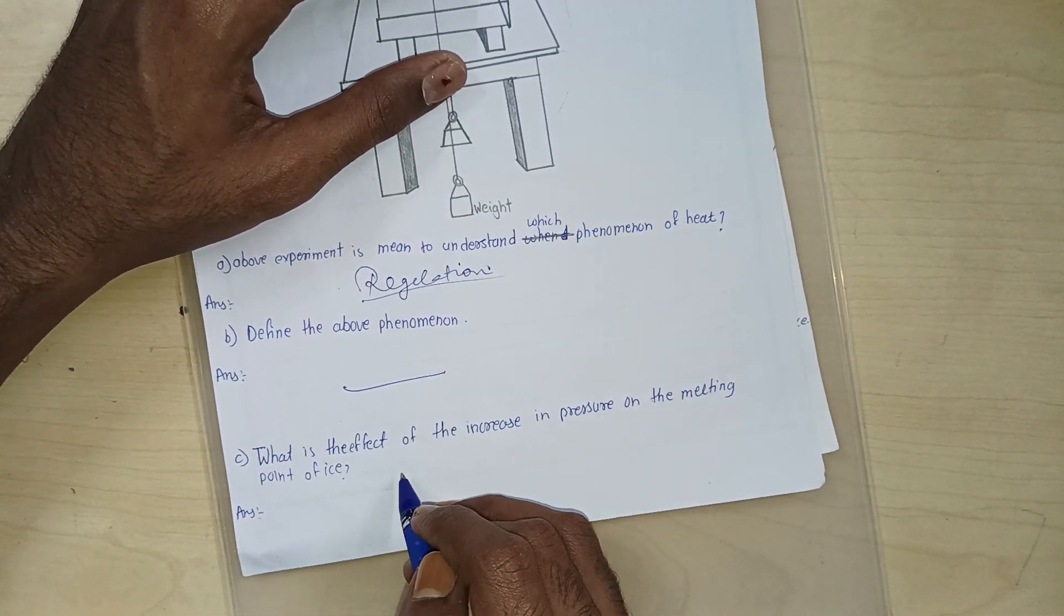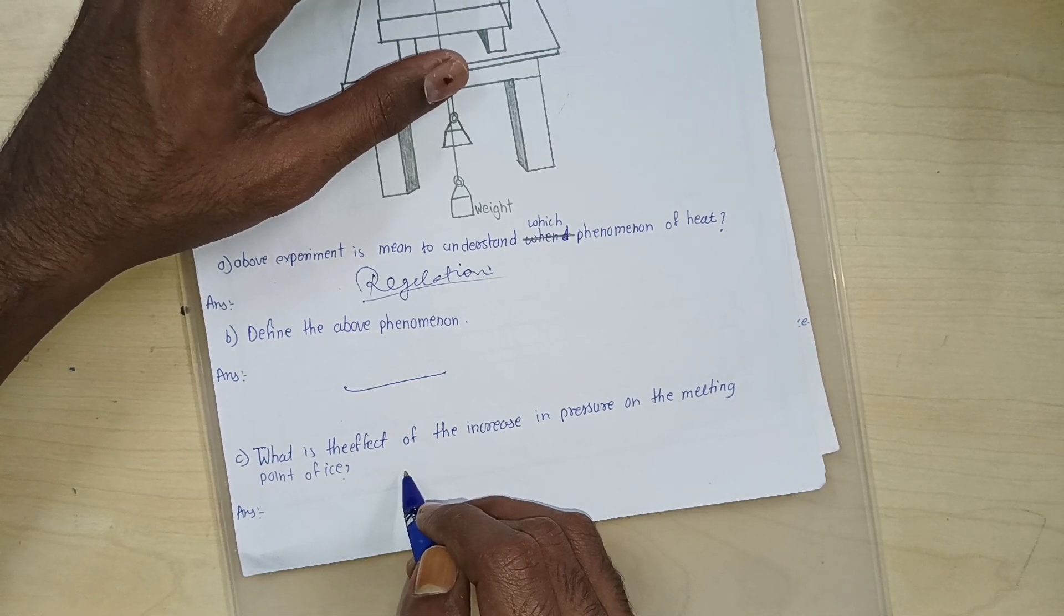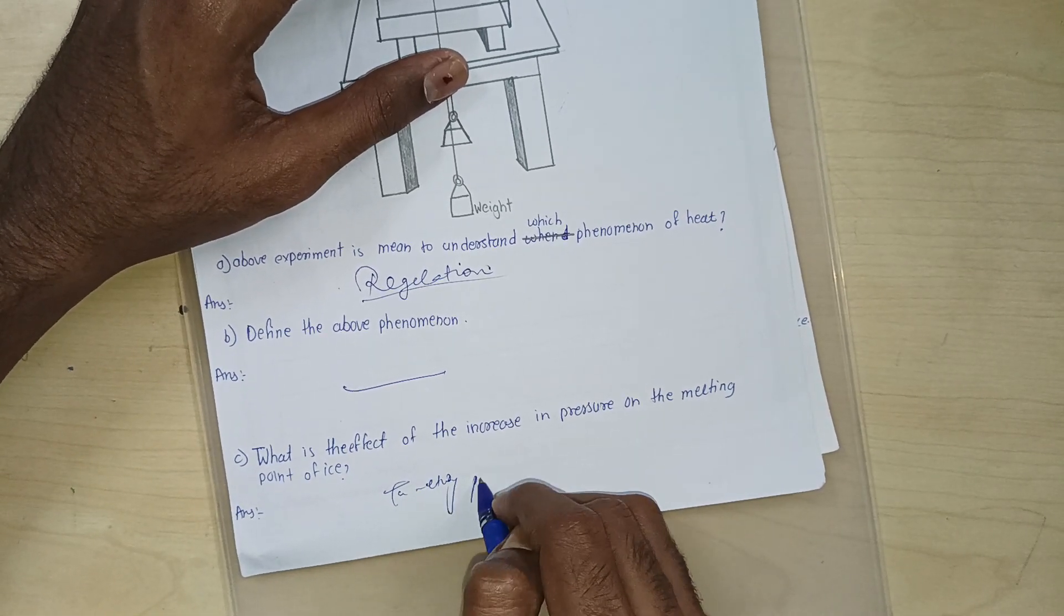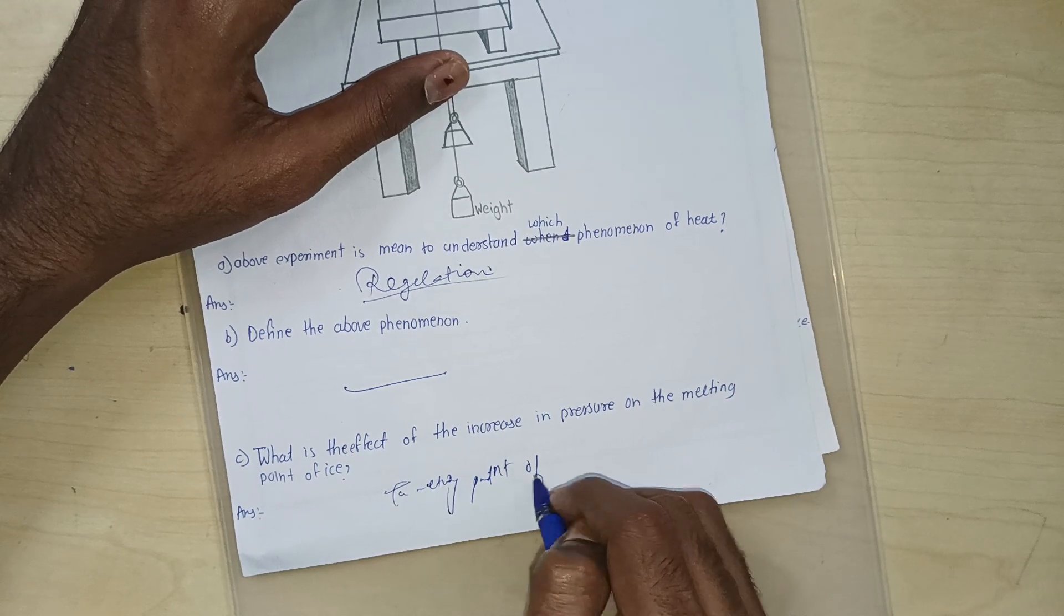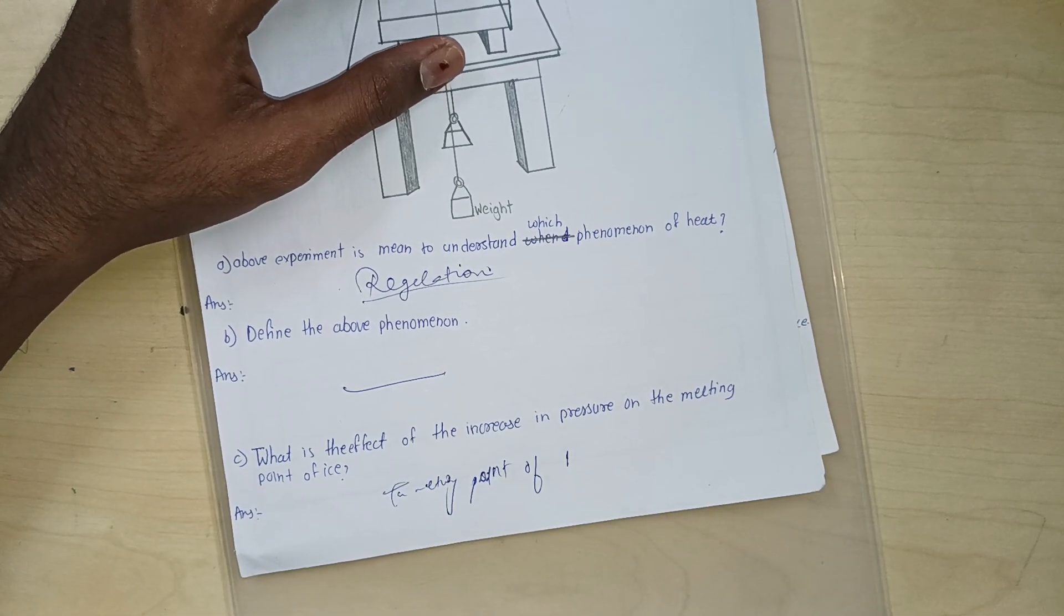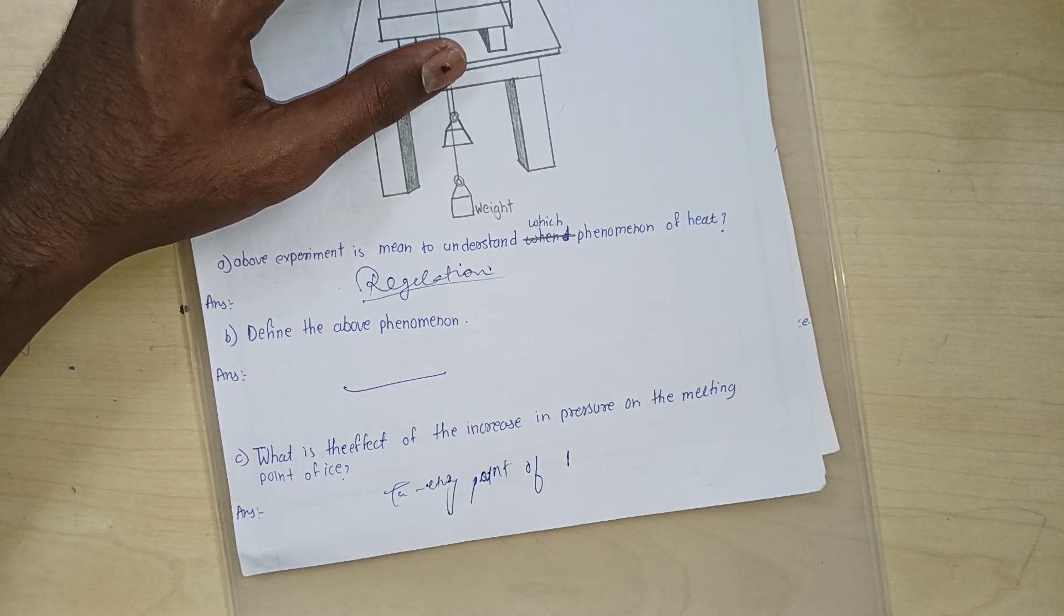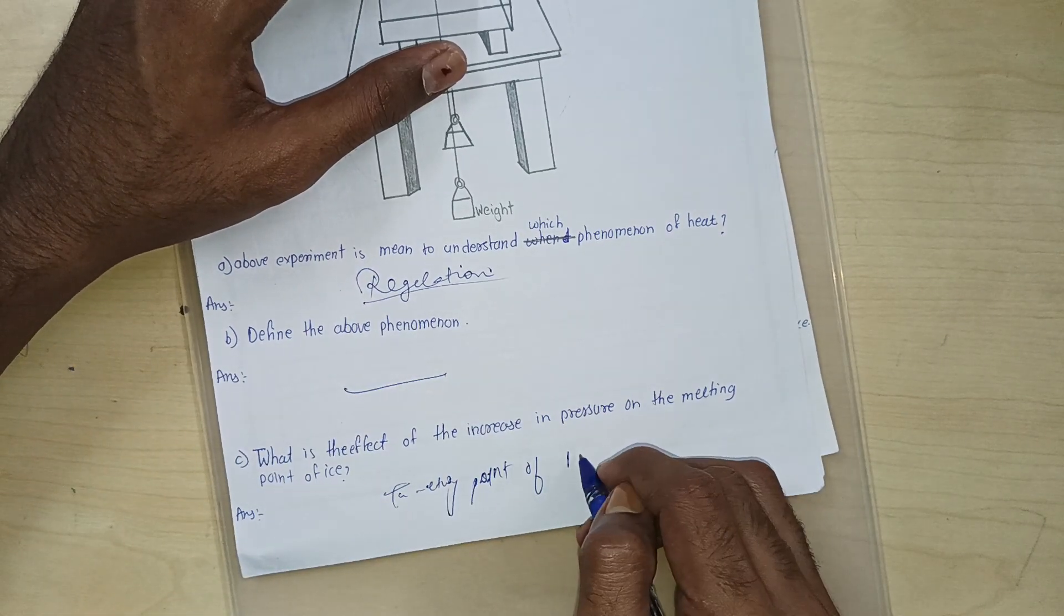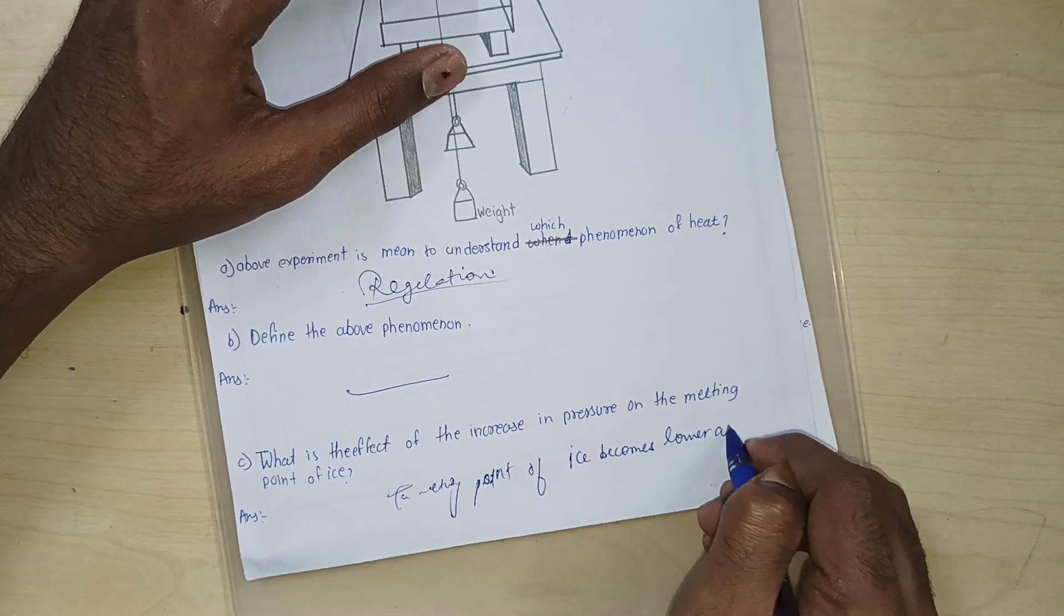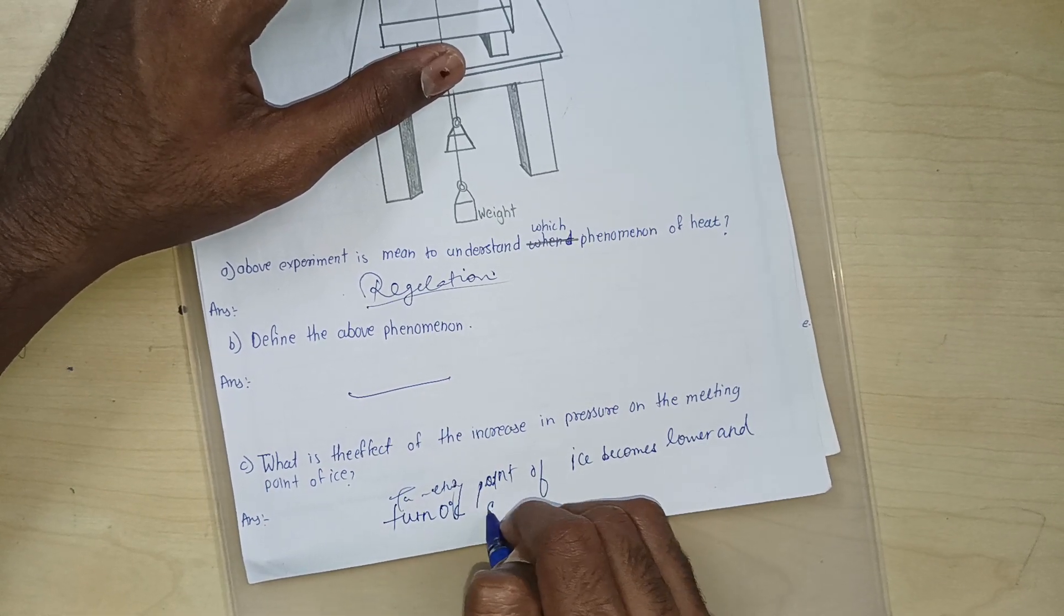This is the effect of the increase in pressure on melting point of ice. Now the melting point of ice becomes lower than zero degree Celsius due to applied pressure.